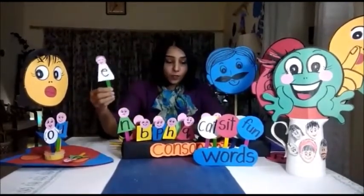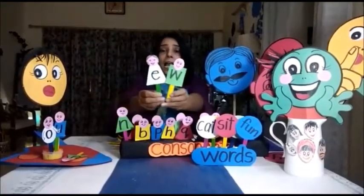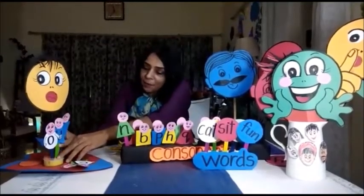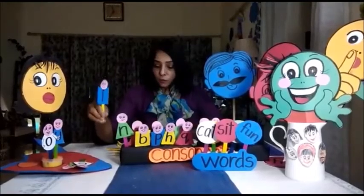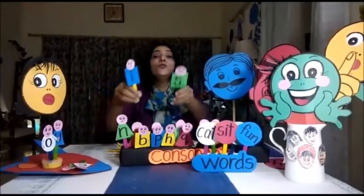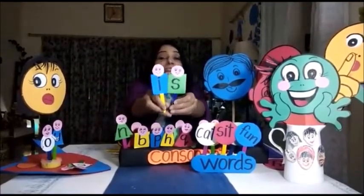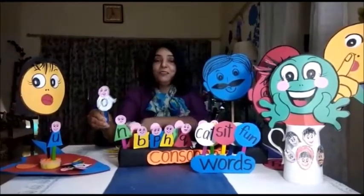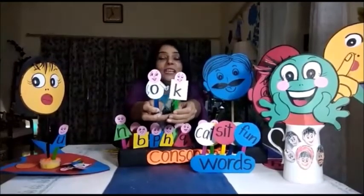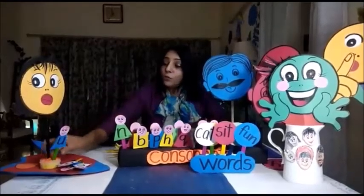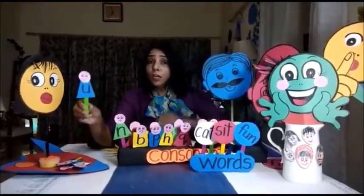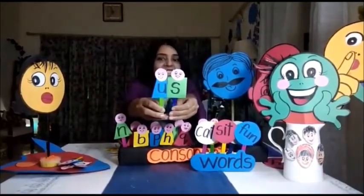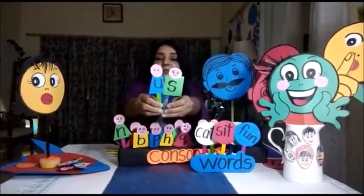So now it was E's turn. E wanted to become friend with which consonant? O, K, W — and they made a word. Now came the turn of I. I was looking for whom shall I become friend with? And I said I will be friends with S, and they made a beautiful word, IS. Now O was looking for a partner and wanted to become friends with K, and it became OK. So now U was looking for a partner — I am all alone. But I will make a friend so that we become US. So U became friends with letter S, and they became US.